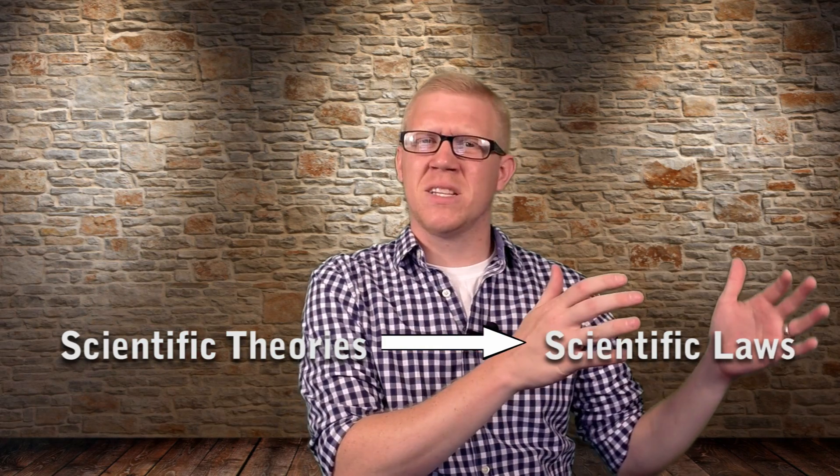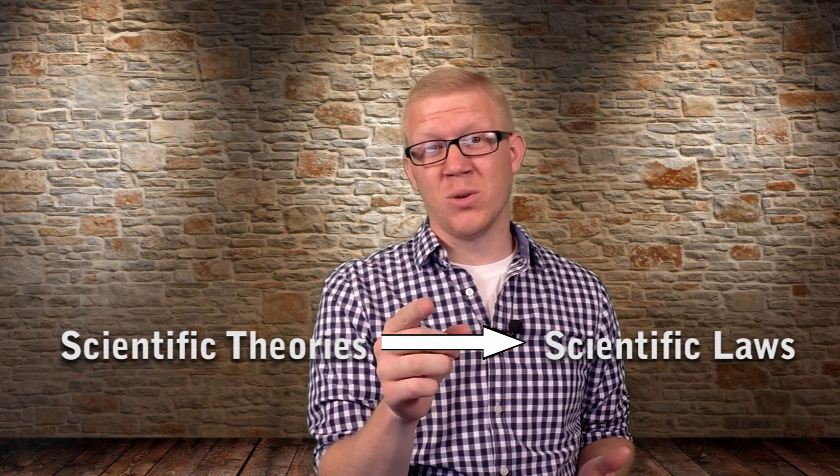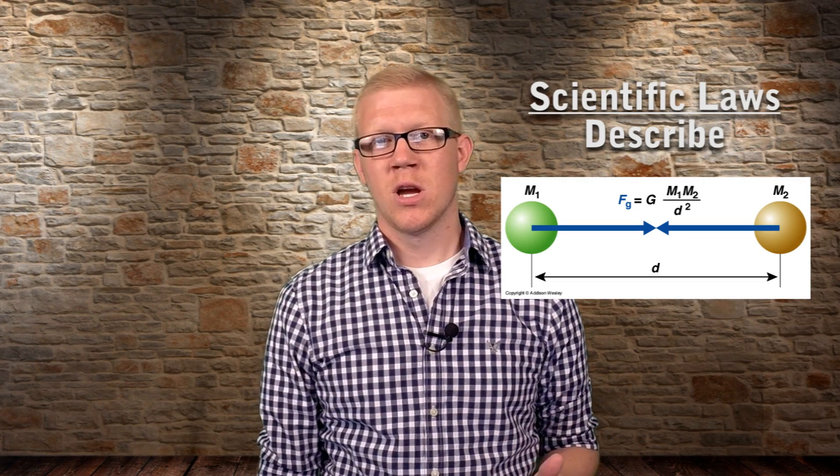Now there is also a misconception that scientific theories eventually become scientific laws, but that is absolutely not the case. A scientific law just describes patterns found in nature. For example, Newton's law of universal gravitation states that any two objects with mass will attract one another. So if you stand on Earth and drop an object, it will fall to the ground due to a gravitational force. But this law gives no explanation for where that gravitational force comes from.